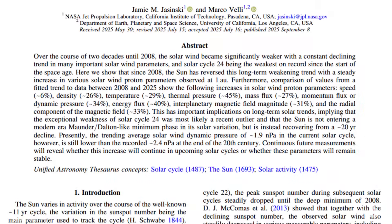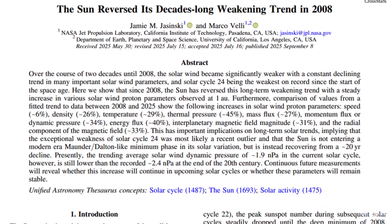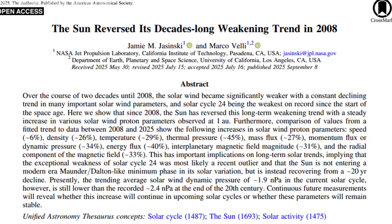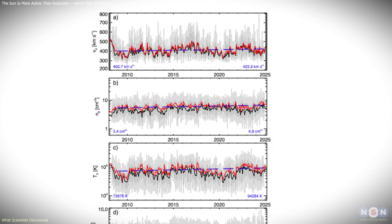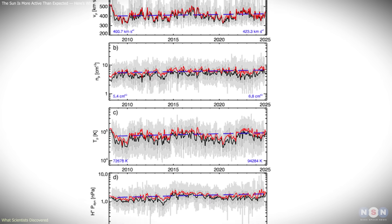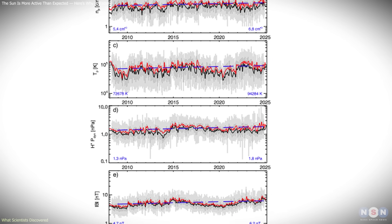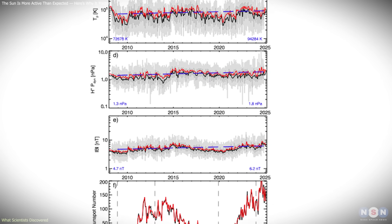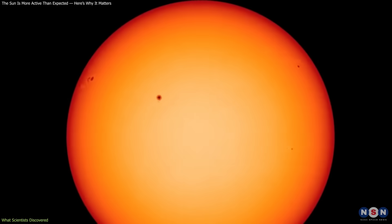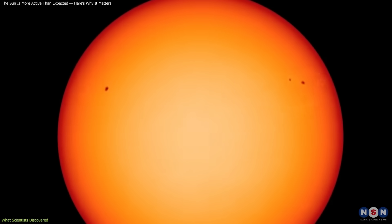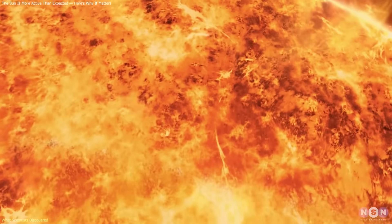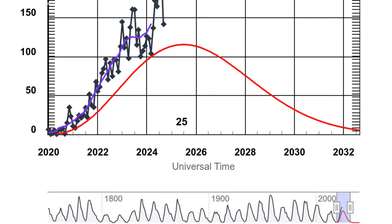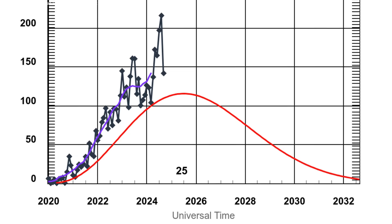To investigate further, NASA researchers Jamie Jasinski and Marco Velli examined solar wind data stretching back to 2008. They found a consistent rise in nearly every measure—speed, density, temperature, pressure, and magnetic field strength. This was more than a temporary surge in sunspots. It reflected a broad strengthening of the output across multiple indicators. The result was a clear reversal of the previous downward trend.